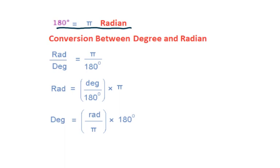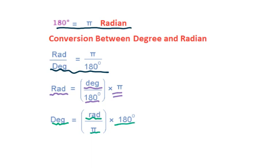You can use this ratio to figure out the conversion between degree and radian. Radian equals the given degree divided by 180, then times pi. And degree equals the given radian divided by pi, then times 180 degrees.